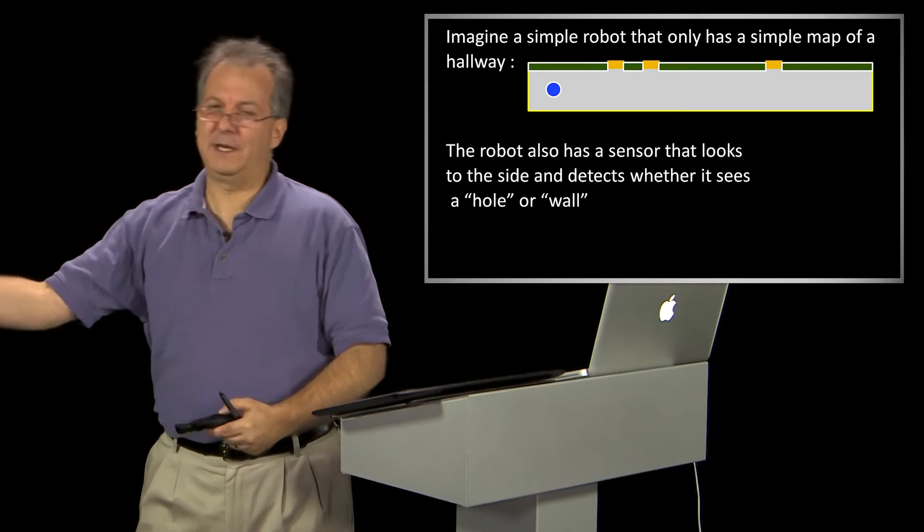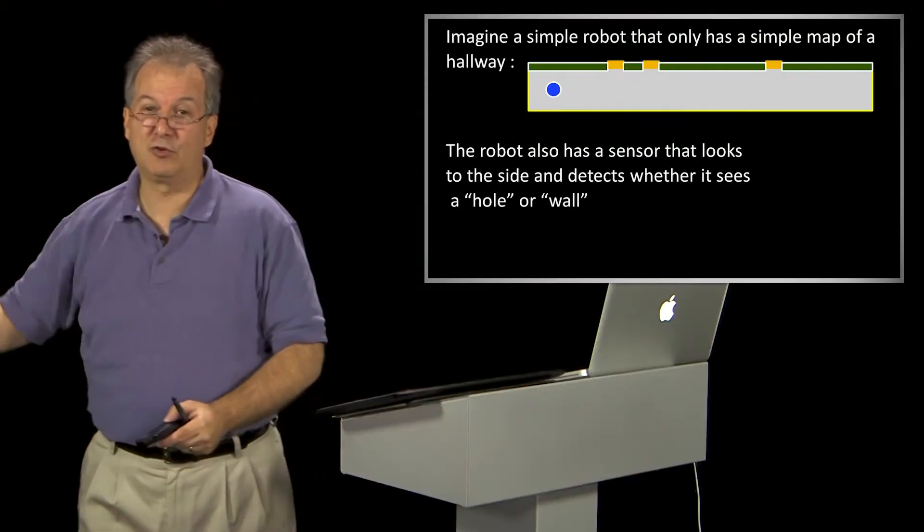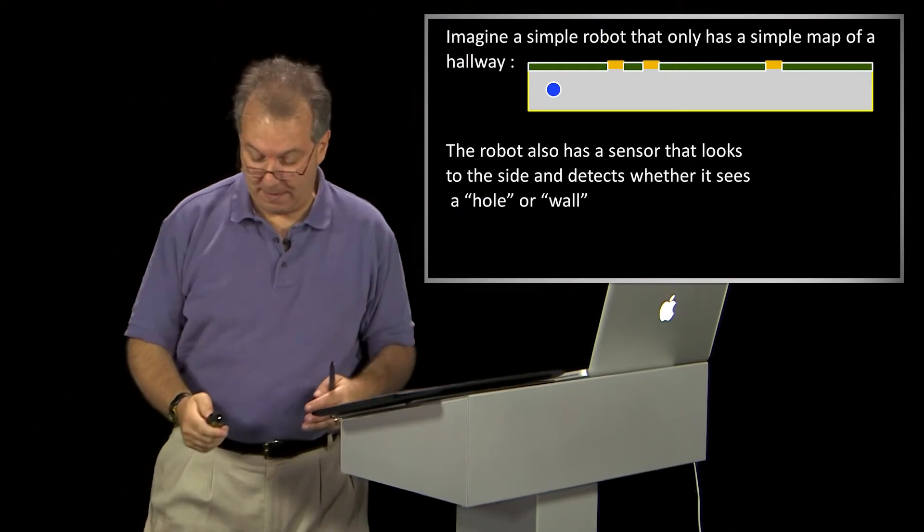And by the way, it's not very accurate. So he sticks it out there and sometimes he sticks it this way and sometimes it stays. So it's approximately that direction. It just says, did I hit something or not? Now, you might think that would be incredibly dumb robot and you might be right. Except,